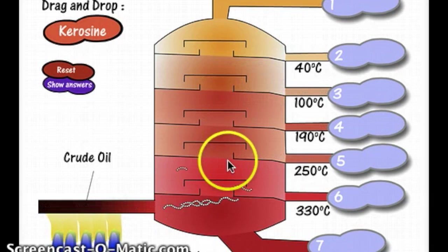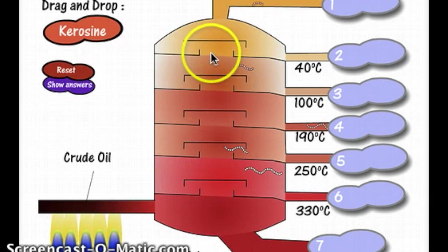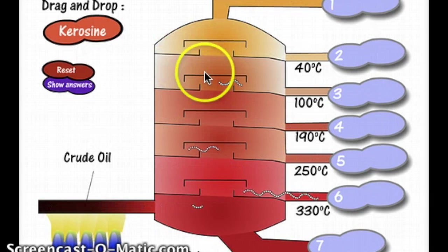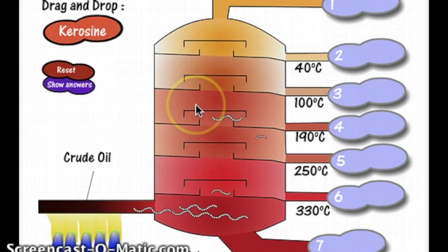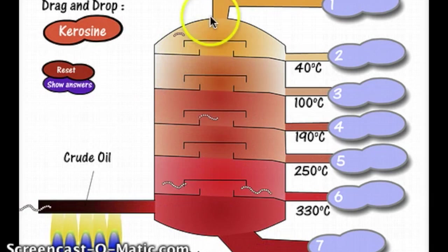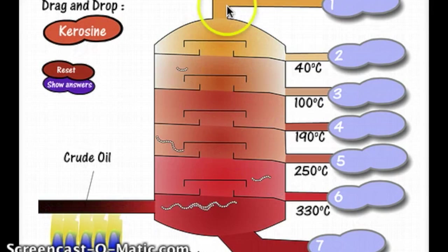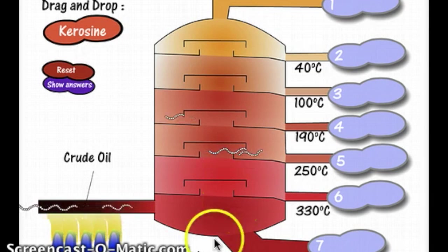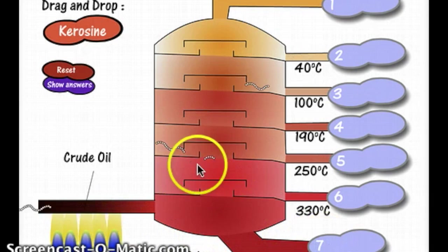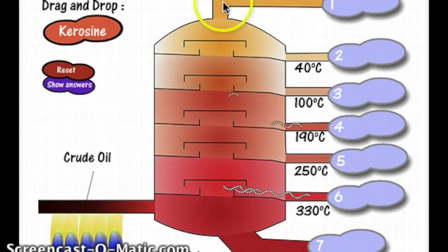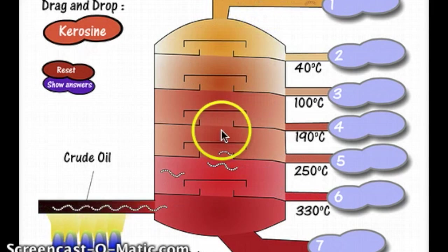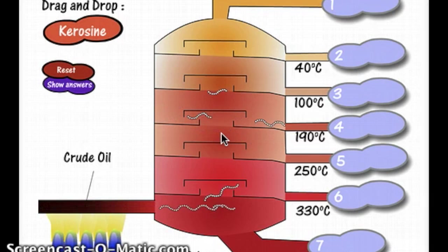Whereas if you have really short chains, they're not held together very strongly at all in the liquid. They will turn into a gas at a very low temperature, but that also means they're going to condense at a lower temperature. So these travel all the way to the top of the column before they condense. That means we have longer chains condensing at the bottom and shorter chains condensing at the top, allowing us to separate chains into different chain lengths - different fractions.